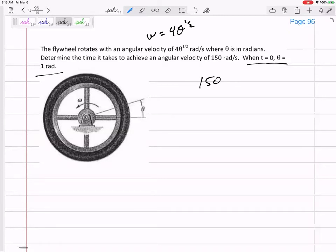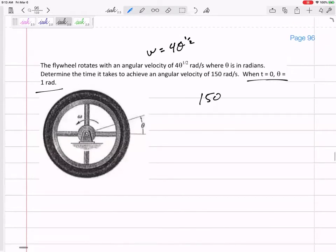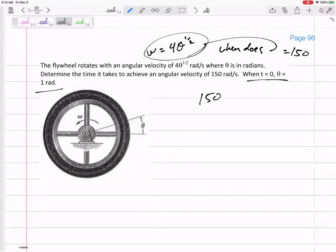So let me not overthink this. If I'm given an equation for angular velocity, and I want to know the time it takes to get for that to equal – no, no, no. When does this equal 150, right? That's what it's asking. Here's an equation. When does this equation equal 150?